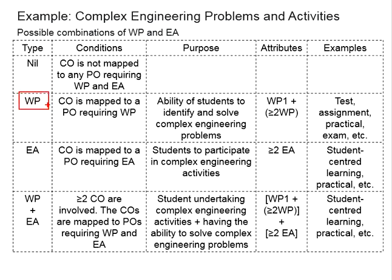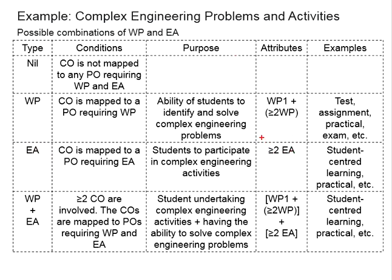For complex engineering problems, you will require WP1 plus more than two other WP, ranging from WP2 to WP7. As for EA, you will need at least two EA attributes to qualify the relevant engineering activities to be complex. If you are having both, you will need to fulfill the requirements of both.